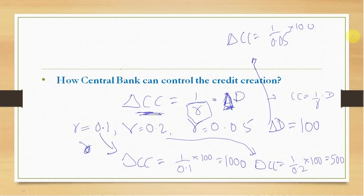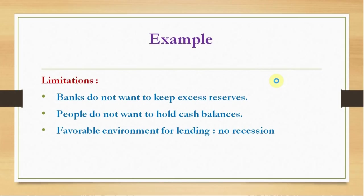So this equals $2,000. By changing the value of r, the central bank can reduce or increase the total credit creation power in the economy. However, this story has some limitations. The first limitation for the multiplier principle to work is that the banking system must not want to keep excess reserves beyond the cash reserve ratio. In our example, out of the $100 deposit, the bank divides $10 as CRR and lends $90.